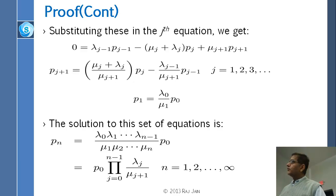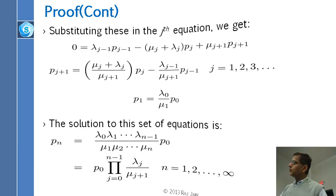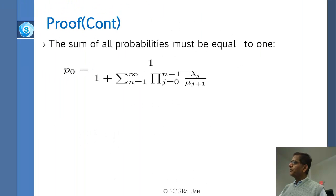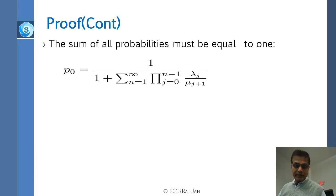Once you have all the probabilities, they have to add up to 1. If you add all of them to 1, then you can calculate p_0. So p_0 comes out to be 1 upon (1 plus this expression).